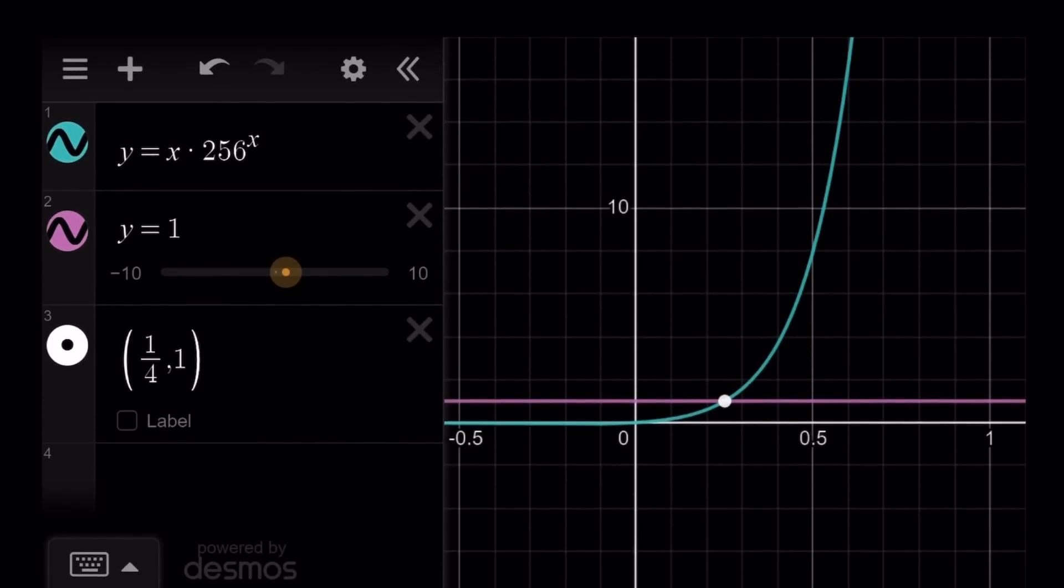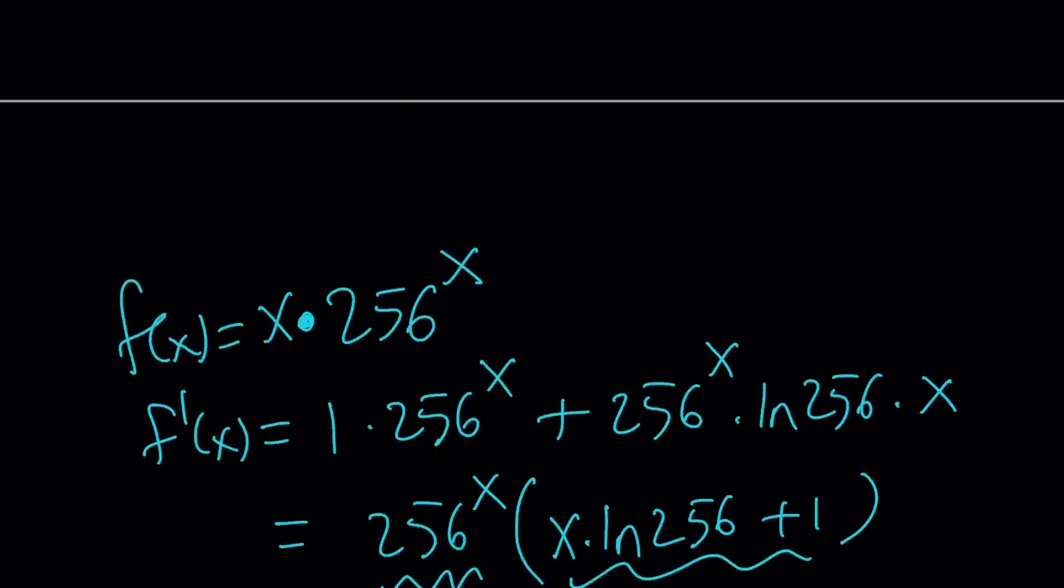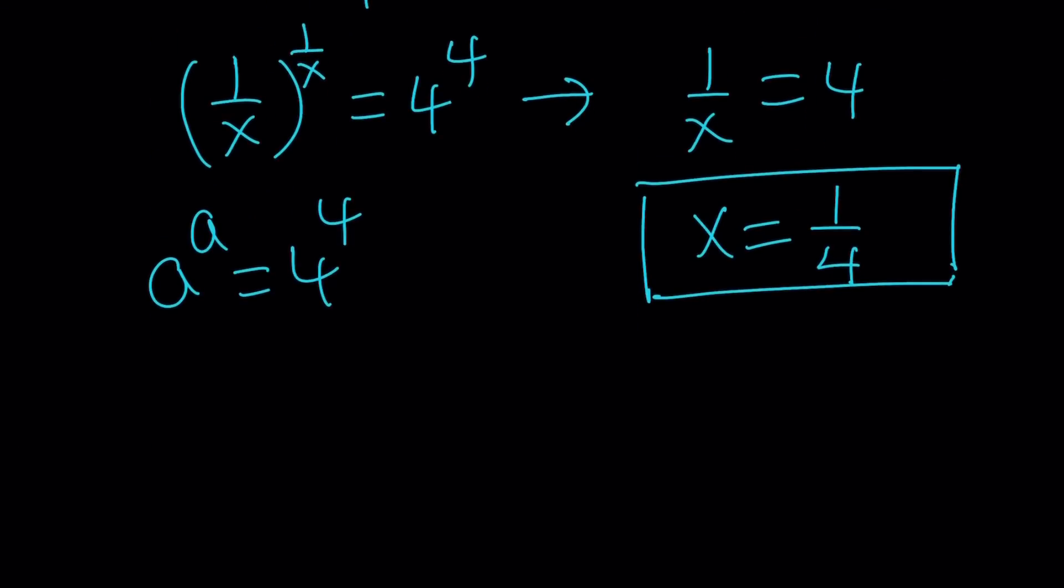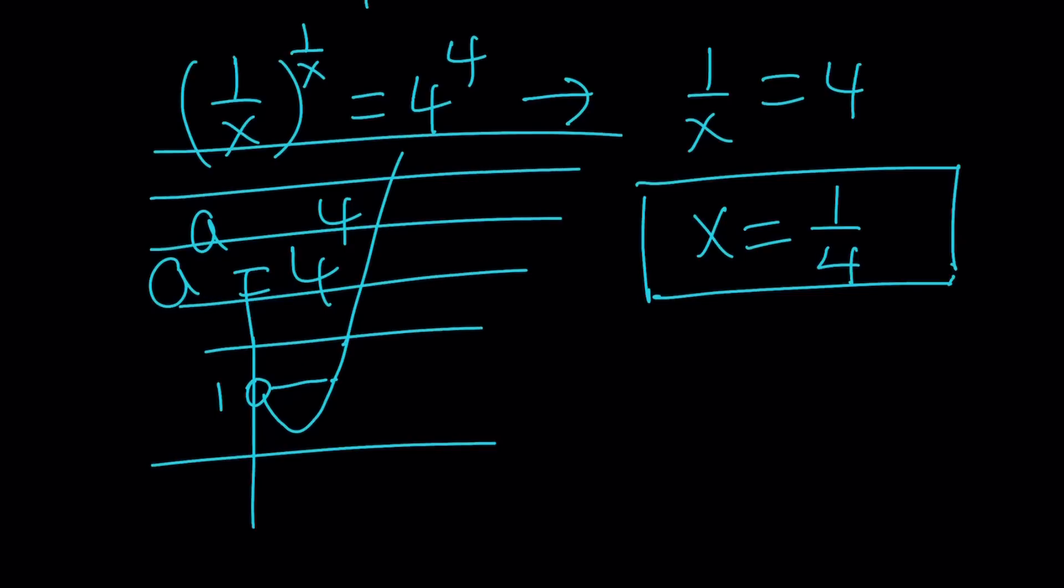So our function on this interval is going to increase and it's going to intersect y equals 1 at one point. If you consider x to the power x, it's going to look like this. And for large values, for y values that are larger than 1, there's only going to be a single intersection point.